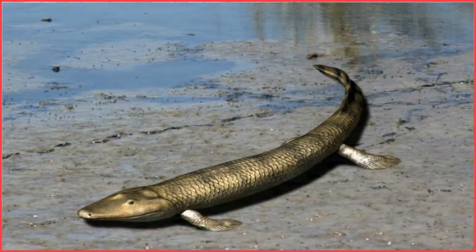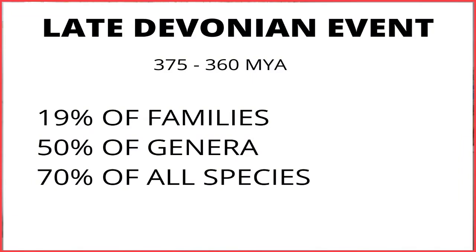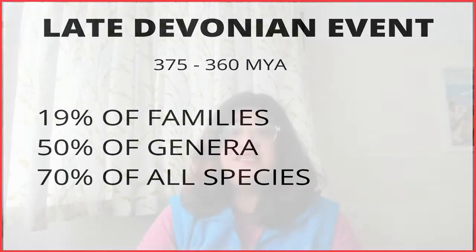Some of them, like the fascinatingly named Tiktaalik — which, by the way, is an intermediate species between fish and amphibians — have developed forelegs and are now moving on to land. And again, boom, around 375 to 360 million years ago, a prolonged series of extinctions take place that eliminate about 19% of all families, 50% of all genera, and at least 70% of all species. This is the Late Devonian extinction event, and its causes range from fluctuations in sea level, asteroid strikes, and climate change, one or all of which may have led to oxygen depletion in the oceans.